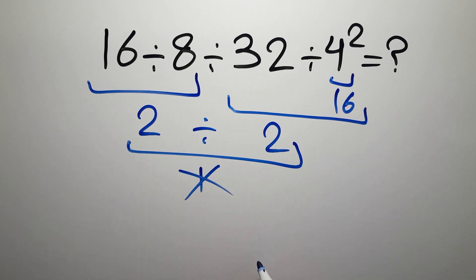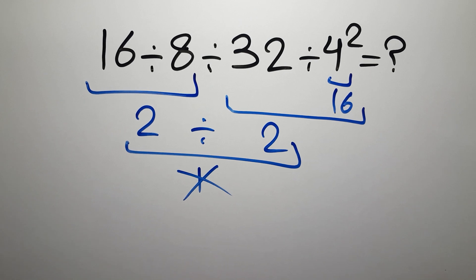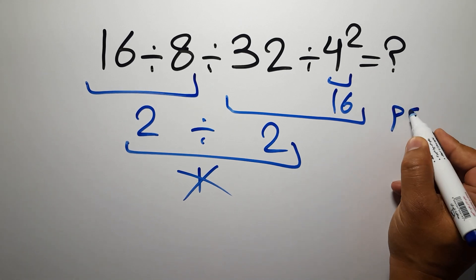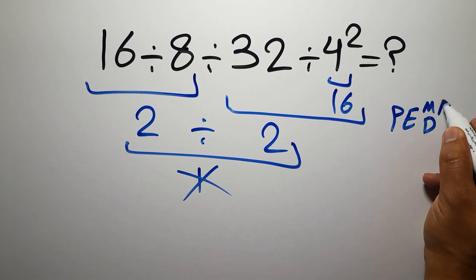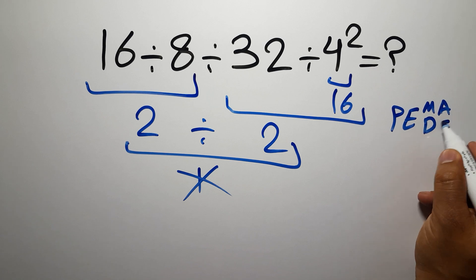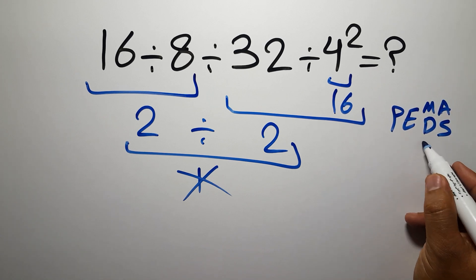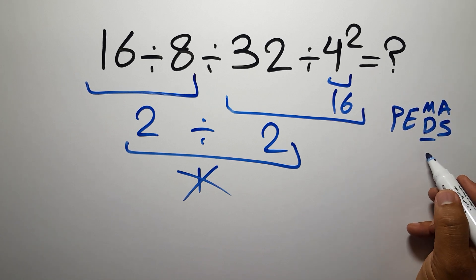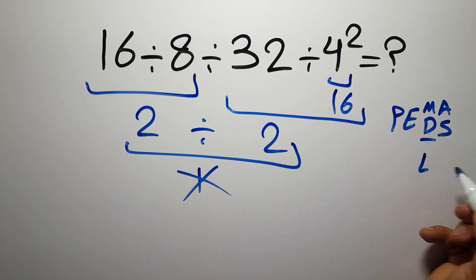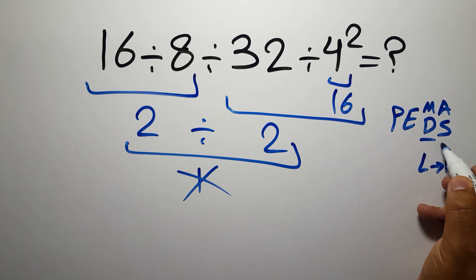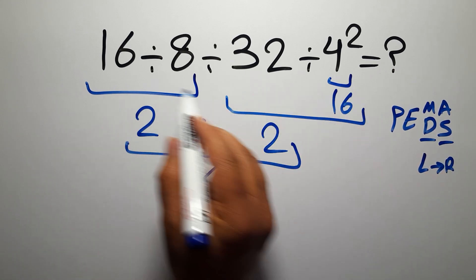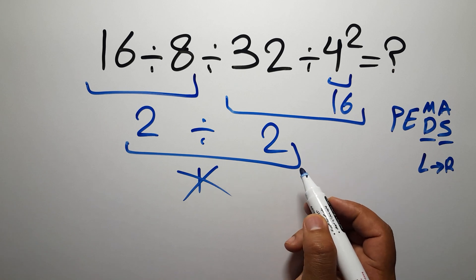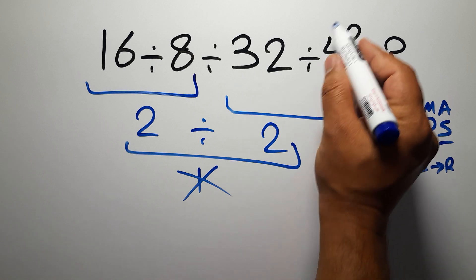According to the order of operations, first we have to do parentheses, then exponents, then multiplication or division, and finally addition or subtraction. Remember that multiplication and division have equal priority and we have to work from left to right. The same applies to addition and subtraction. In this expression we have three divisions and one exponent.